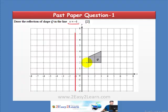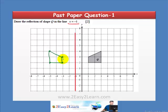After drawing the line, we need to mark the reflected points. This point is 2 units away from the line of reflection, so it will reflect 2 units on the other side. Similarly, count the distance of each corner from the line and mark the reflected point the same distance on the opposite side. Join all these points — this is our reflected shape, shape Q, reflected as shape Q-dash.